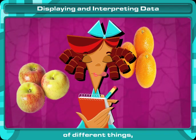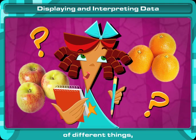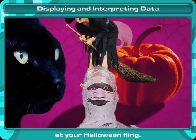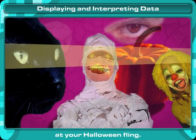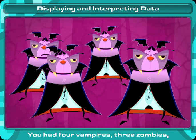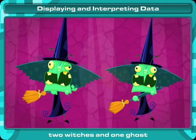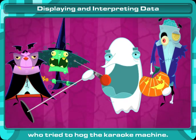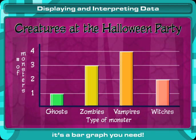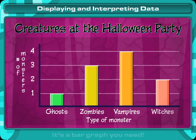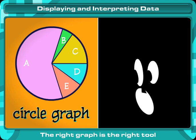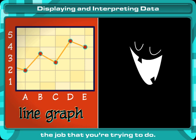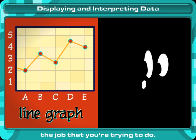Let's say you want to make comparisons of different things, like the different types of creatures at your Halloween fling. You had four vampires, three zombies, two witches, and one ghost who tried to hunt the karaoke machine. And for comparing your data, it's a bar graph you need. The right graph is the right tool for the job that you're trying to do.